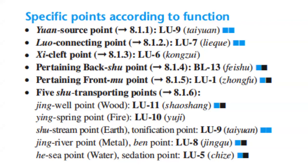The pertaining Front Mu point is Lung 1. For the five Shu transporting points: the Jing Well point (wood) is Lung 11. The Ying Spring point (fire) is Lung 10. The Shu Stream point (earth) — the tonification point — is Lung 9.